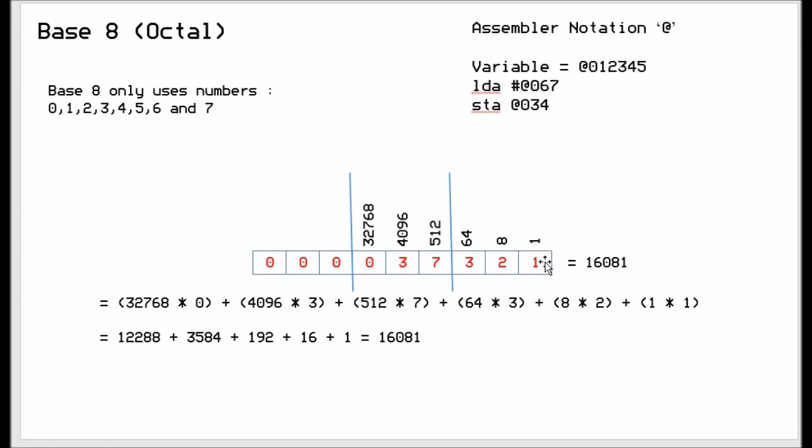Same thing again, each column is a power of 8. So 8 to the power 0 is 1, 8 to the power 1 is 8, 8 to the power 2 is 64, 8 to the 3 is 512, 8 to the 4 is 4096, 8 to the 5 is 32768. And we do exactly the same thing again, so we multiply the number by the column value and we add them up.